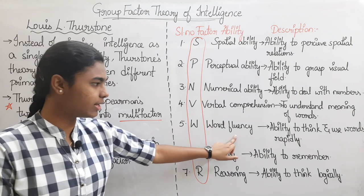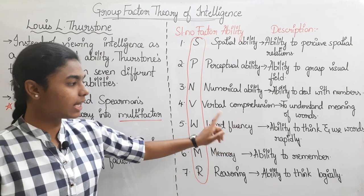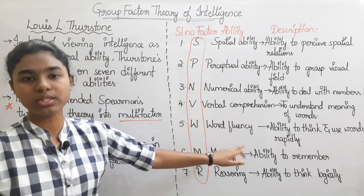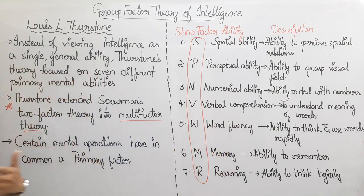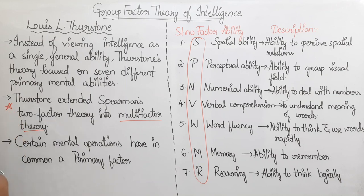The next one is Word Fluency — the ability to think and use words rapidly. For example, in a particular situation, we use our ability to produce words fluently.